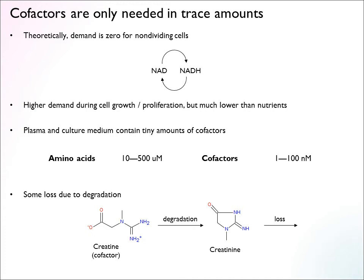The exception is when cofactors degrade, and this happens to some cofactors more than others. Creatine is one example that is continually lost in humans: there is a spontaneous process where creatine is cyclized to form creatinine, which can't be recovered by cells and is lost in urine continuously. About one percent of the creatine pool is lost daily, so it must be continuously synthesized. This is an exception; we likely observe such degradation behaviors for cofactors because they stay around for a long time and recycle.